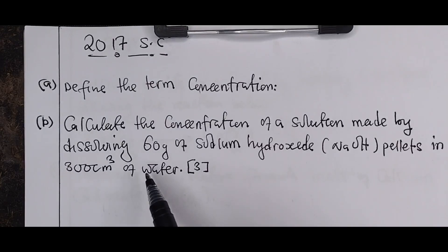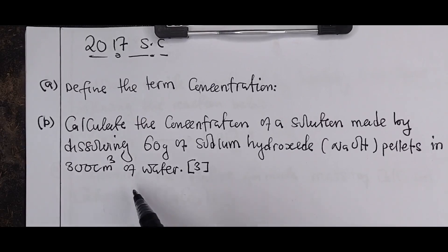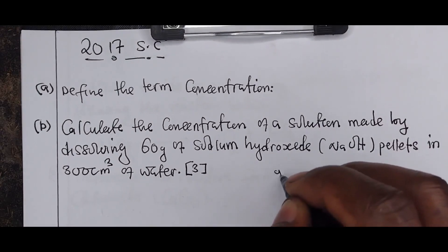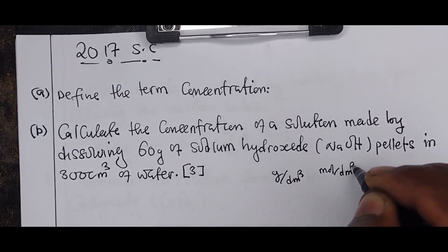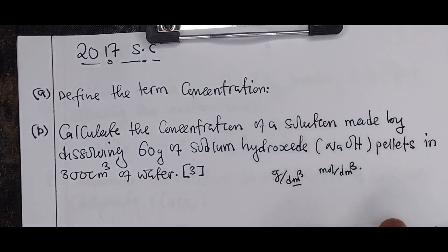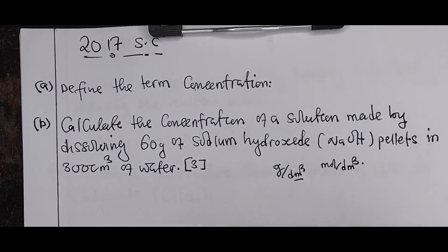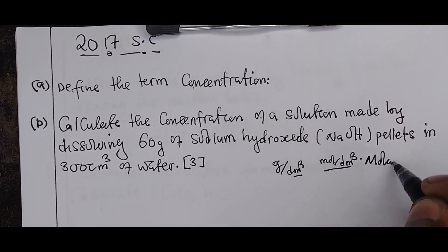The second question is: calculate the concentration made by dissolving 60 grams of sodium hydroxide in 300 cm³ of water. Concentration can be calculated in grams per dm³ or in moles per dm³. In this case we are going to calculate concentration in moles per dm³, also known as molarity.